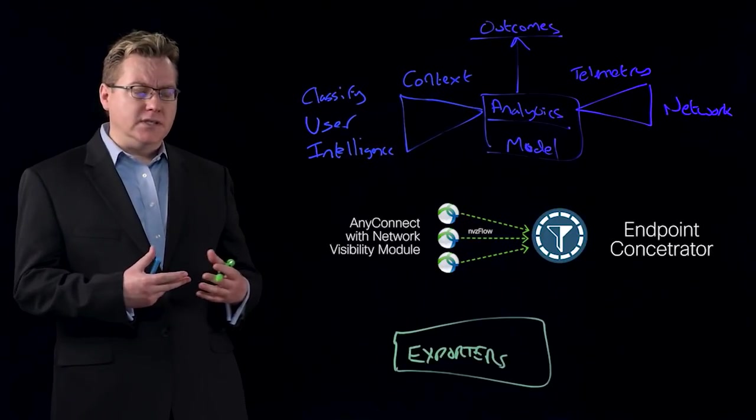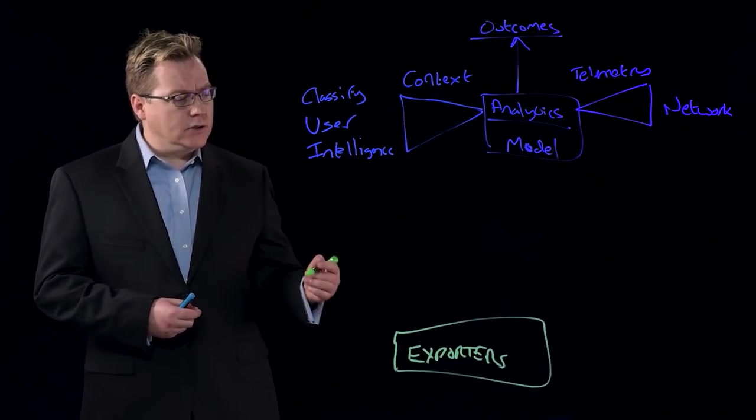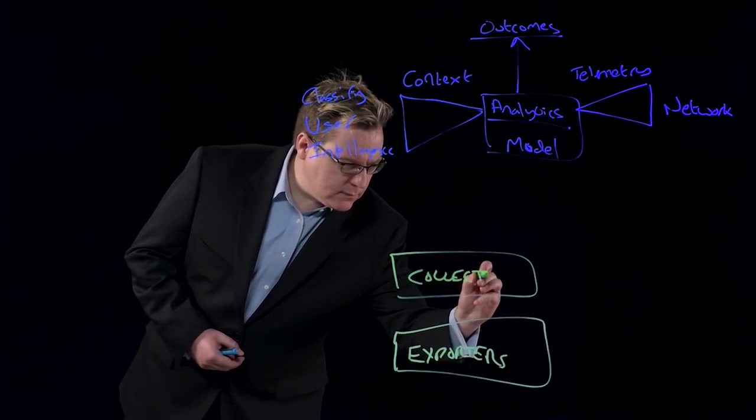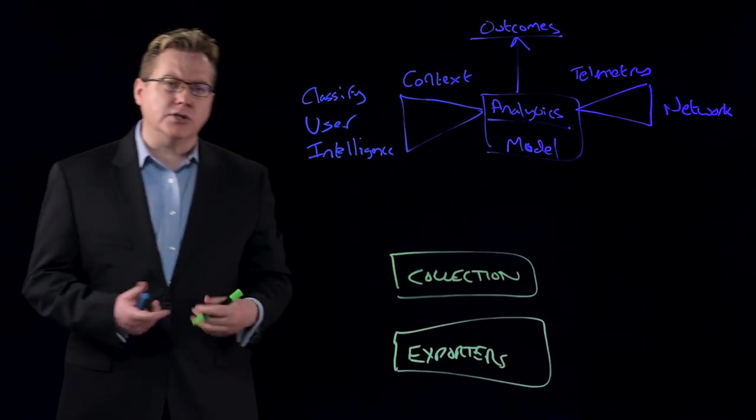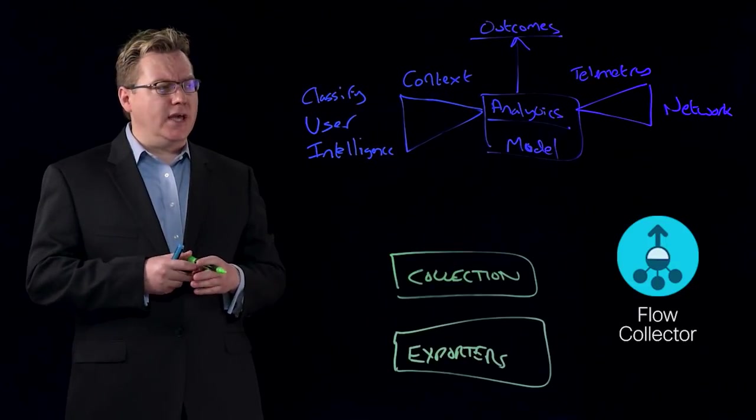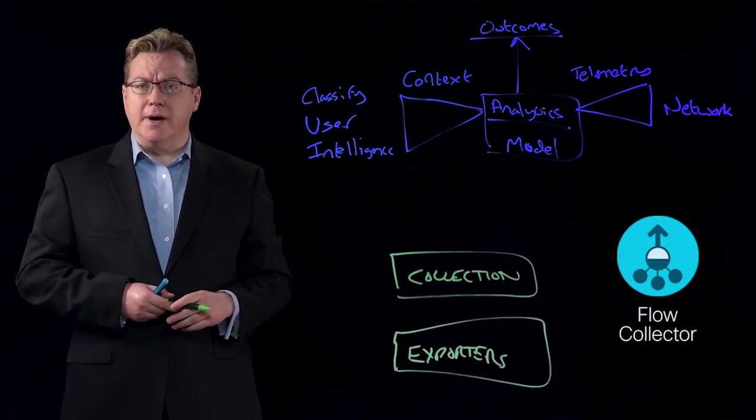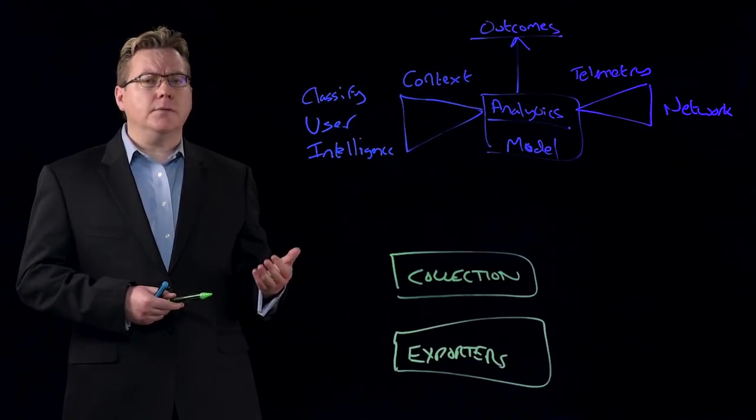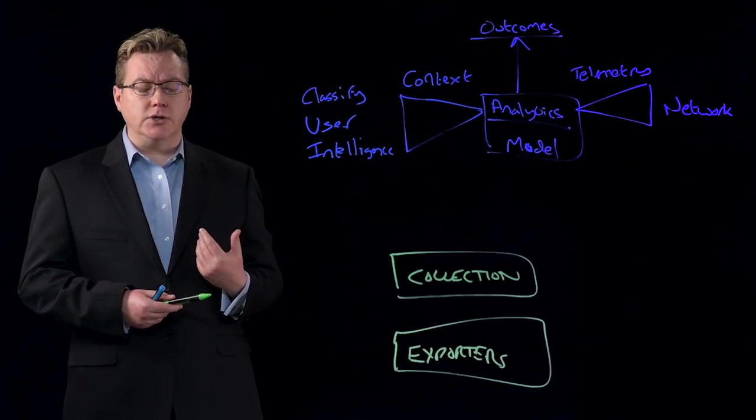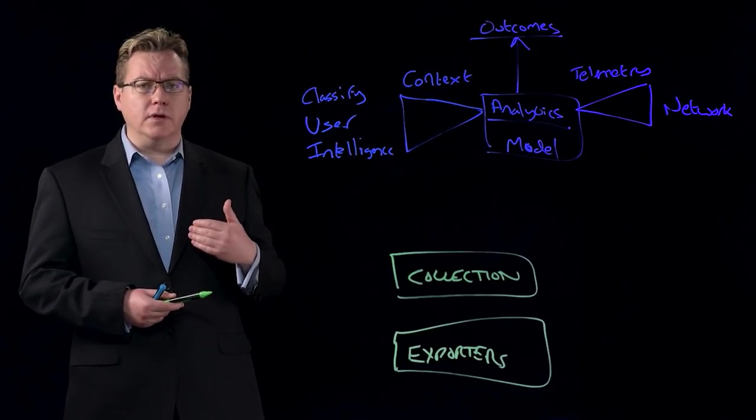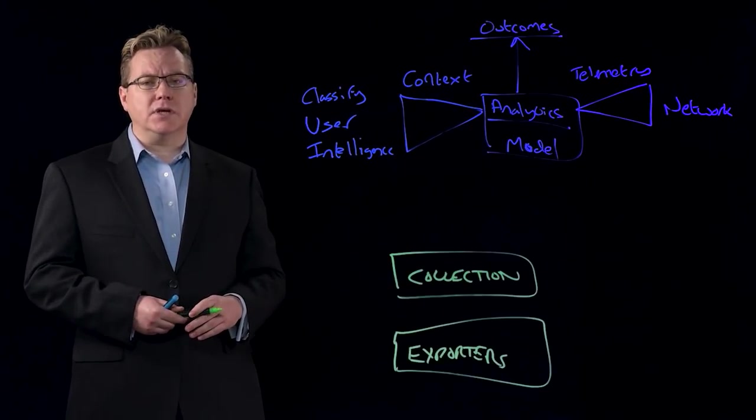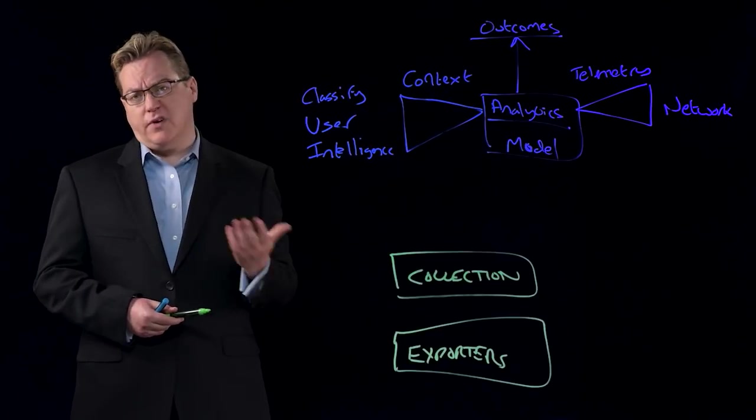And all of that information comes together and is included in our data collection layer. And our data collection layer is the flow collector product that really brings all this information together and puts it in this data model we talked about earlier. So there's a lot of things we have to think about as we get large amounts of telemetry and transactional information in. How do we deduplicate all of the information that's repeated? How do we stitch this together into a meaningful conversation? So that we can understand who is talking to who about what for how long.